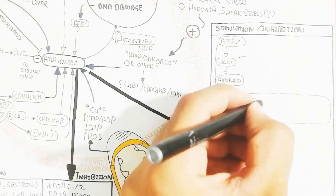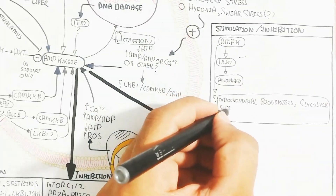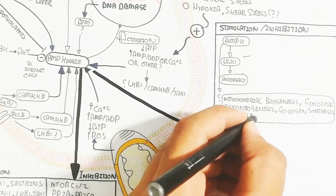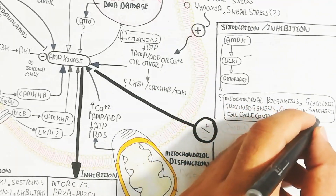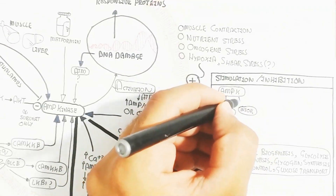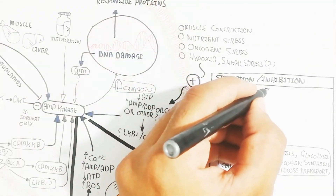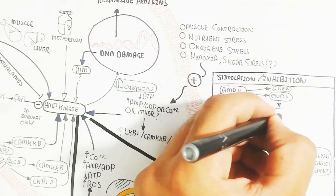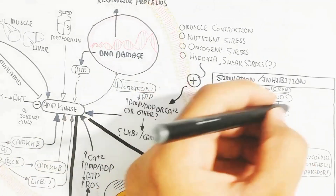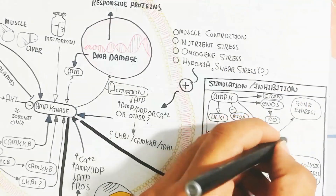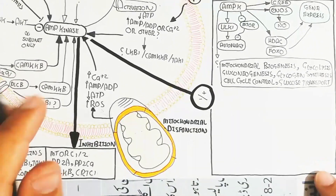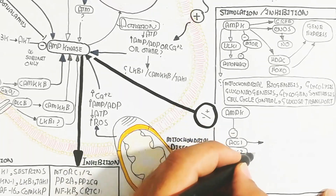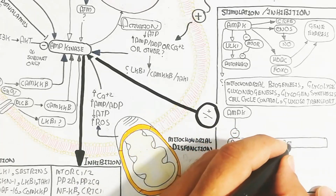AMPK triggers ULK1 and thus autophagy, so that damaged cells are cleared rather than proliferating. AMPK also promotes mitochondrial biogenesis, glycolysis, gluconeogenesis control, glycogen synthesis regulation, cell cycle control, and glucose transport. Because AMPK inhibits mTOR, autophagy is ultimately triggered — mTOR normally suppresses autophagy, so when mTOR is inhibited, autophagy proceeds. Additionally, AMPK activates eNOS to produce nitric oxide, and activates HDAC and FOXO to drive gene expression.